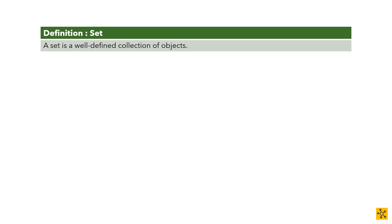A set is a well-defined collection of objects. The 'well-defined' means you are going to know exactly what is in the set, and the set usually has unique elements. Let's start by putting some objects down — let's just go with some kitchen utensils.